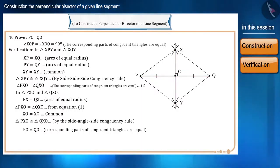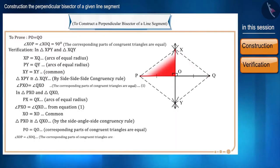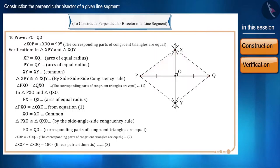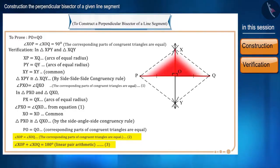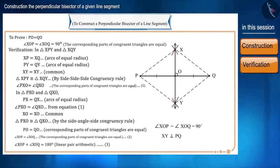We have proved that PQ is bisected by XY. Now, it is yet to be proved that line XY is perpendicular to line segment PQ. Angle XOP is equal to angle XOQ because corresponding parts of congruent triangles are equal — let this be equation 2. And angle XOP plus angle XOQ equals 180 degrees because these angles form a linear pair — let this be equation 3. By equations 2 and 3, we can say that both angles are 90 degrees: angle XOP is equal to angle XOQ is equal to 90 degrees. That is, XY is perpendicular to PQ.